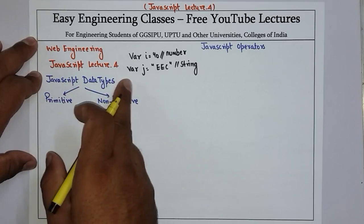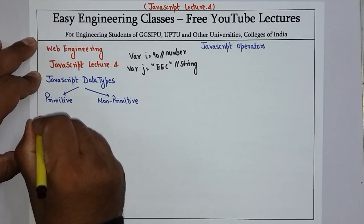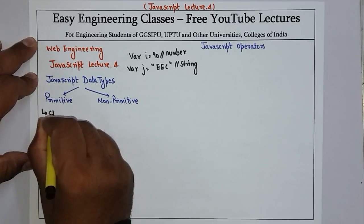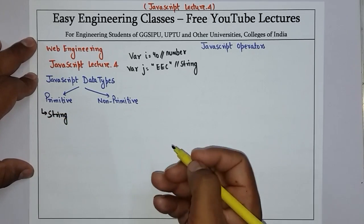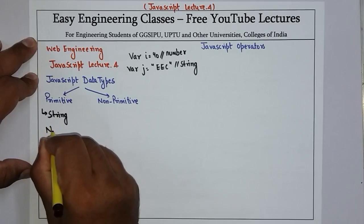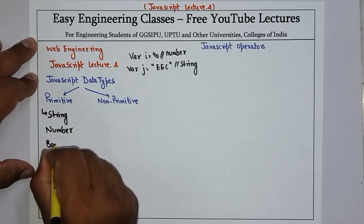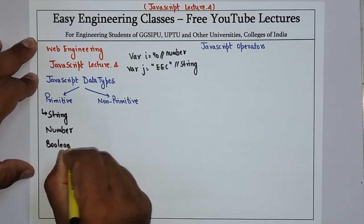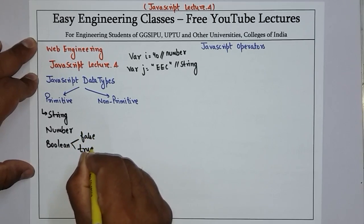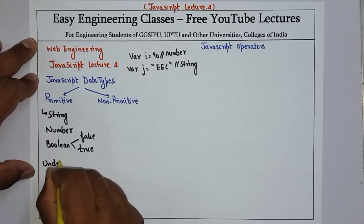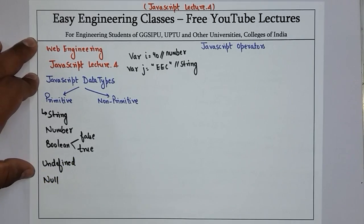JavaScript data types are of two types: primitive and non-primitive. Primitive contains five basic data types: string, which represents a sequence of characters like any other language; number; boolean, which can be either true or false; undefined; and null.